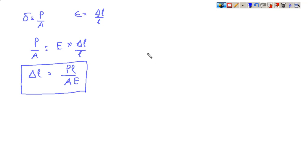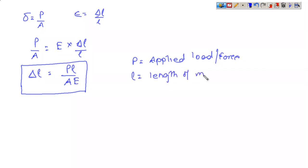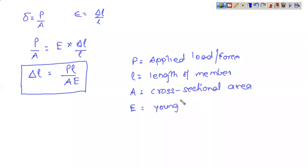In the equation delta L equals PL by AE: P is the applied load or force, L is the length of the member, A is the cross-sectional area — the area of the plane perpendicular to the direction of loading — and E is Young's modulus. This formula is used to find the total change in length.